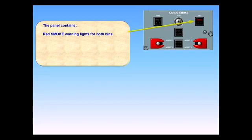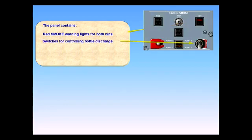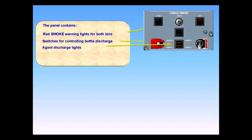The panel contains red smoke warning lights for both bins, switches for controlling bottle discharge, agent discharge lights, and a one-hour warning advising discharge of the second fire bottle.